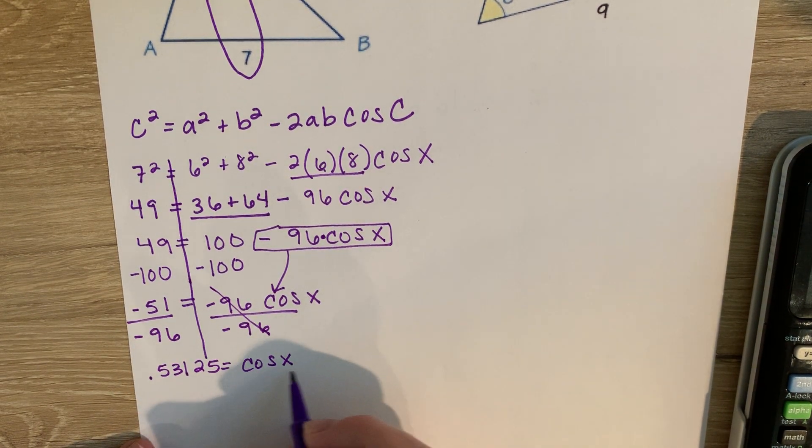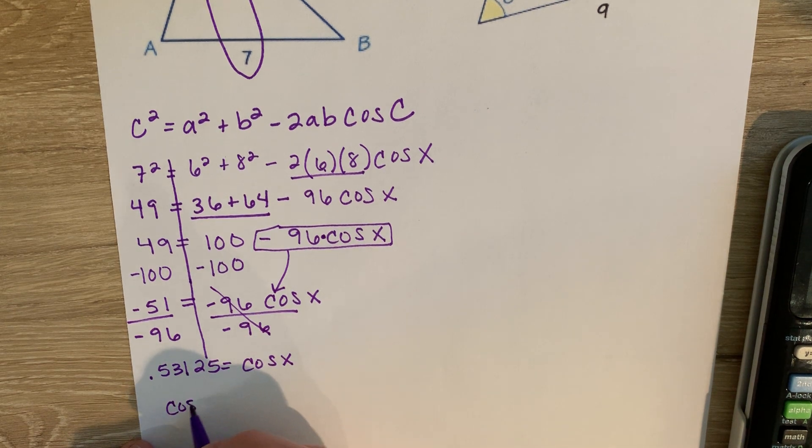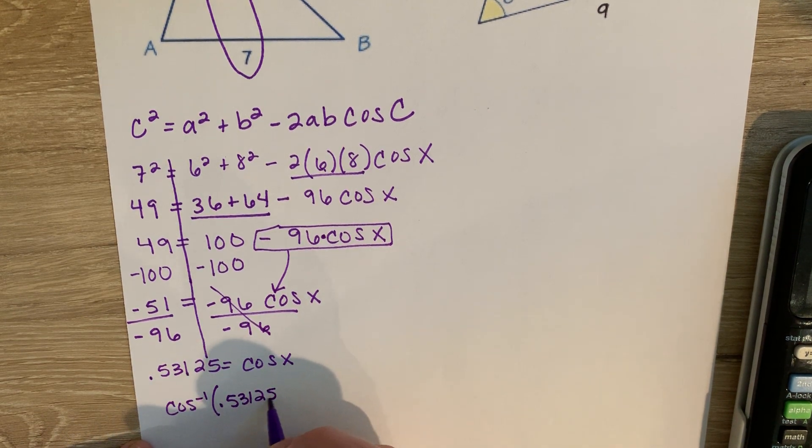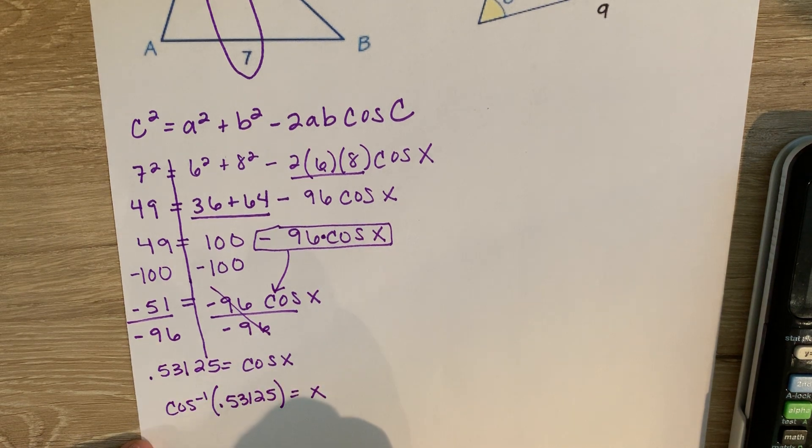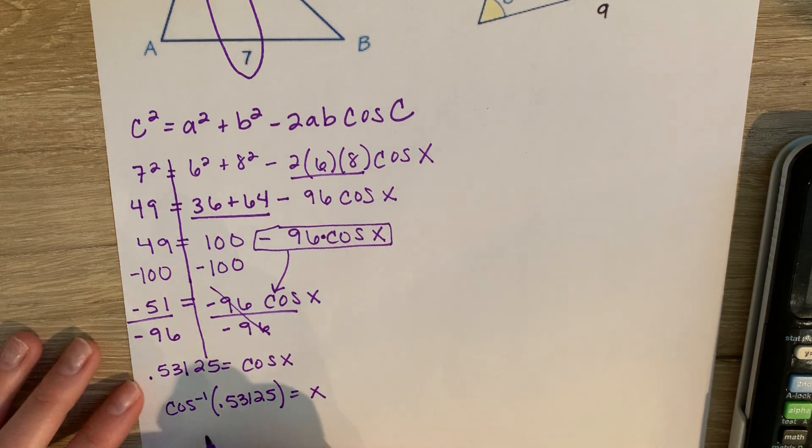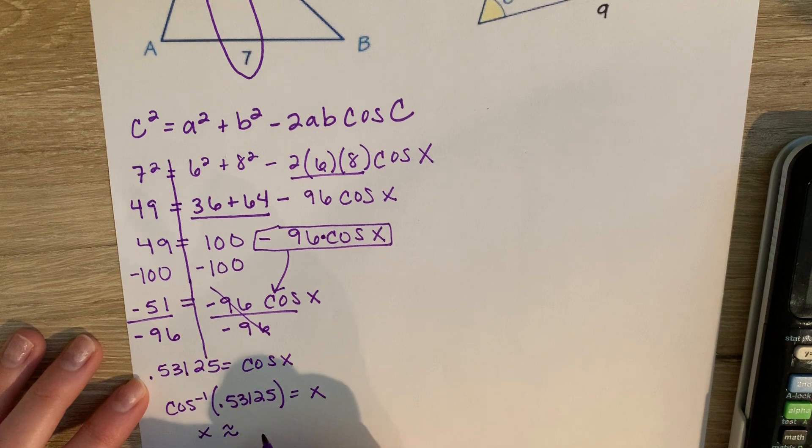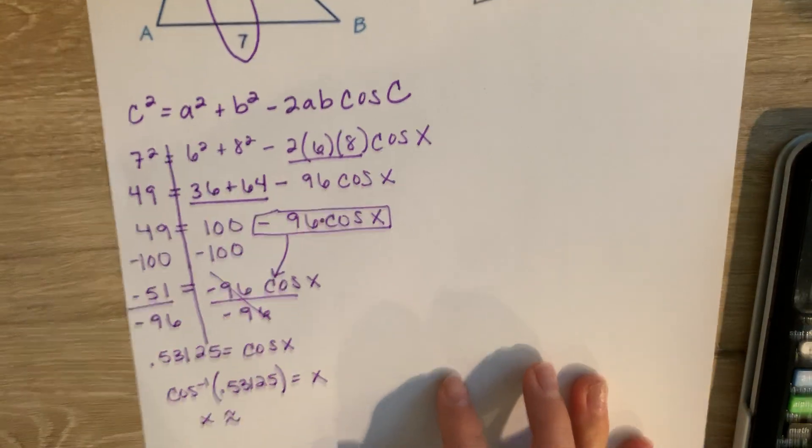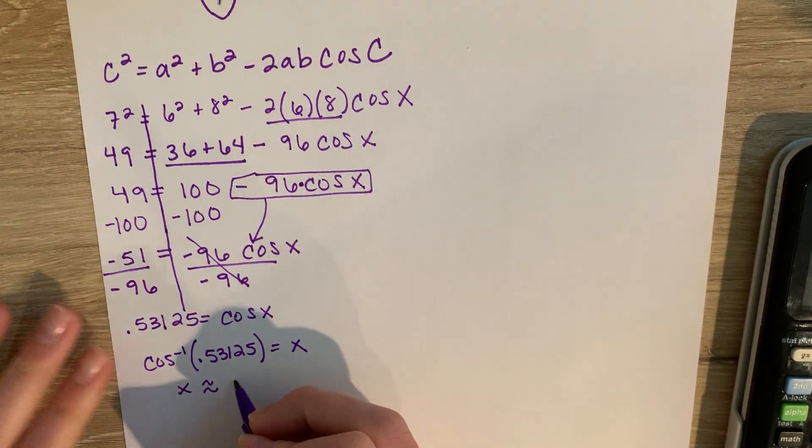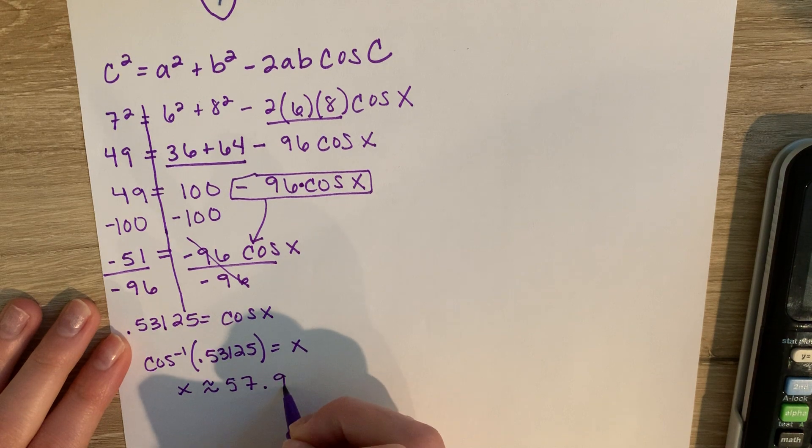And then to find an angle, you should always do the inverse. So when you plug that into your calculator, you get an angle of approximately 57.9 degrees.